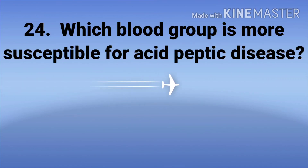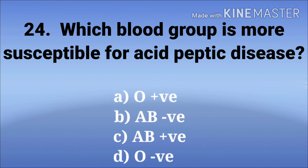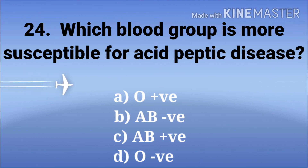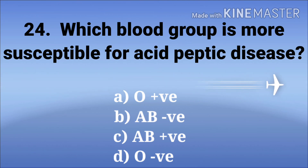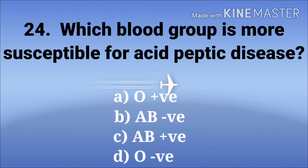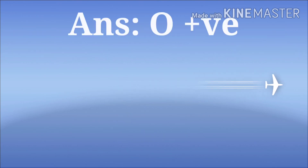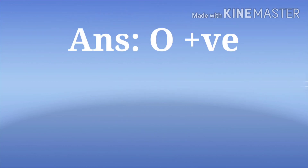Which blood group is more susceptible for acid peptic disease? The options are O positive, AB negative, AB positive, and O negative. The answer is O positive.